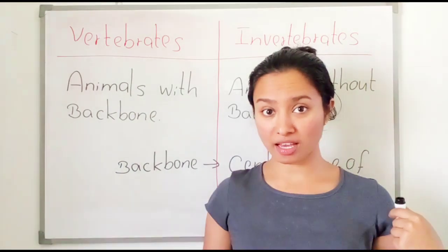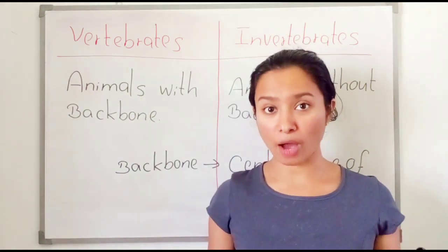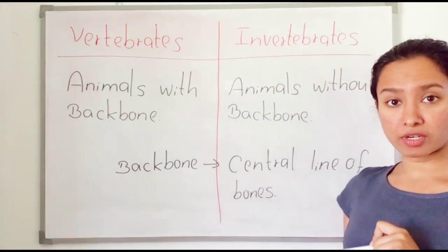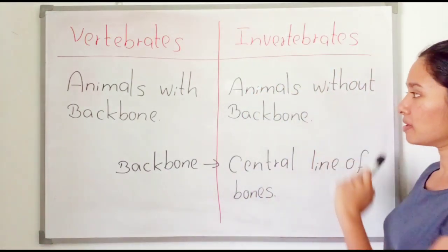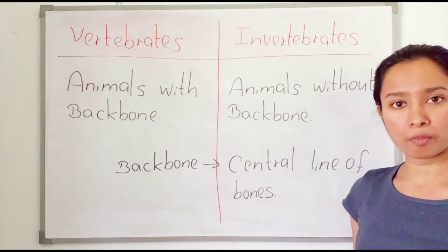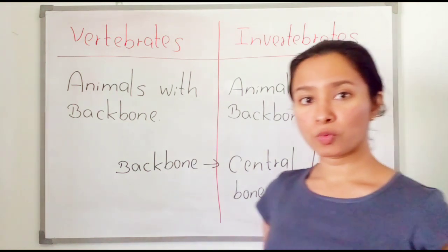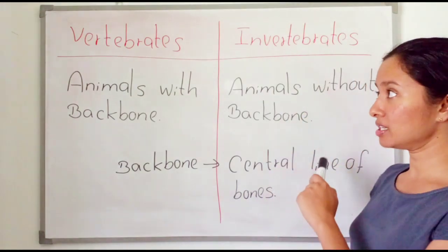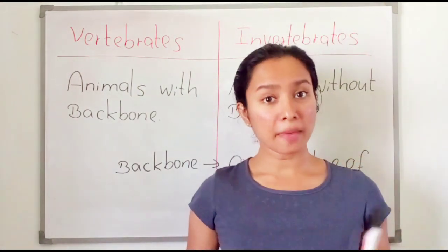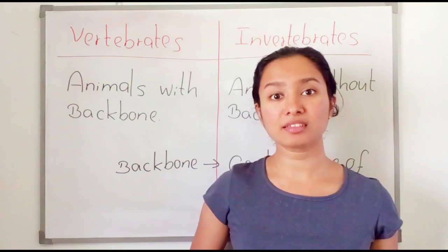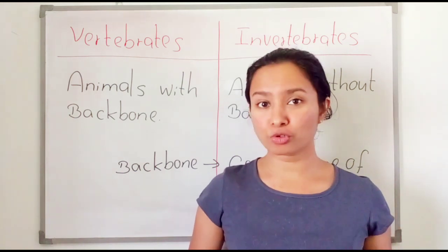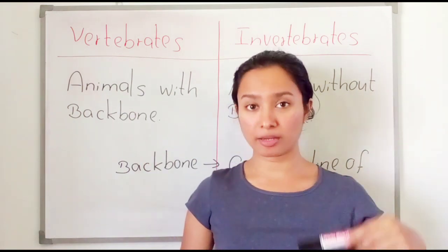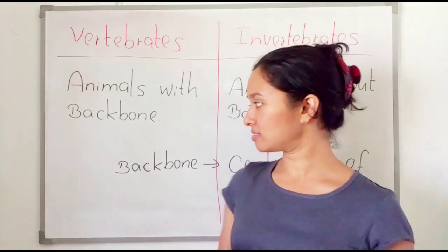Humans are vertebrates because we have a backbone. Invertebrates are the animals without a backbone. So basically we have divided the animals into two groups: vertebrates and invertebrates. Can you tell me some examples of vertebrates and invertebrates?